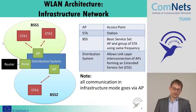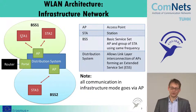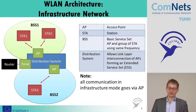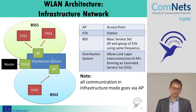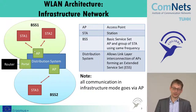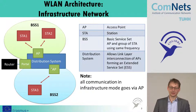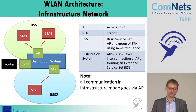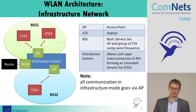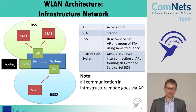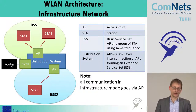In this basic service set, communication between two stations always goes through the access point. We have a distribution system, which allows us to forward packets — without using the network layer — from one wireless network to another. This is reflected in the different addressing schemes needed in the MAC layer. We also have a portal, which passes data from the MAC layer to the higher layers, and a router that forwards packets to the Internet.